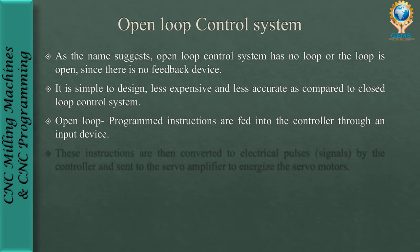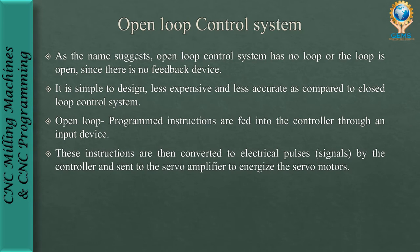In the open loop system, program instructions are fed into the controller through an input device. These instructions are then converted to electrical pulses or signals by the controller and sent to the servo amplifier to energize the servo motors, which then run according to the given input.